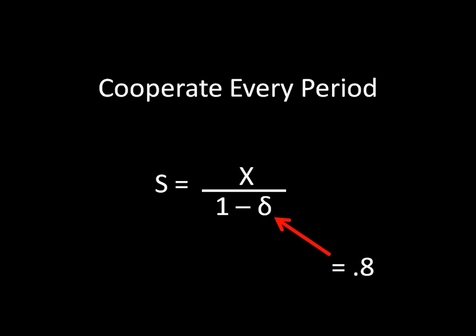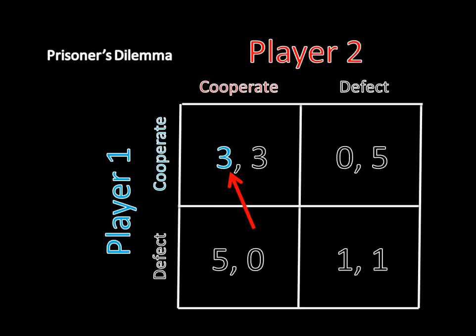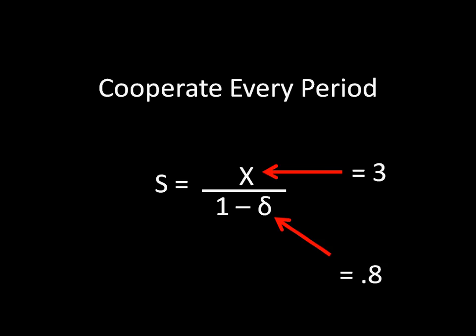Well, I gave you that discount equals 0.8, so that is simple enough. You just stick the 0.8 where the delta is. We then just need to figure out what x is, and we can calculate the sum. So x is going to be our payoff for cooperation in every period, and you just have to go to the matrix here and find that x. So cooperate, cooperate, you find that there's a 3 there, and we're cooperating every period. So this is going to be 3 plus 3 plus 3 plus 3, except we're going to be discounting at every period, which is a geometric series.